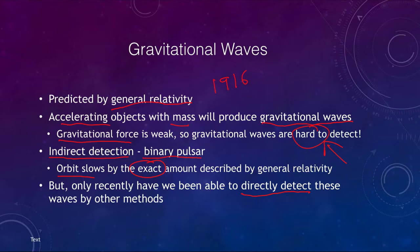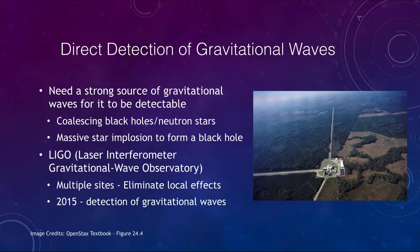In order to detect gravitational waves, we need a very strong source. The Moon moving, the Sun moving, the Earth moving are not going to be nearly strong enough. So what we look for is coalescing black holes or neutron stars — objects with very large mass that, as they coalesce together, would give off massive amounts of gravitational waves.